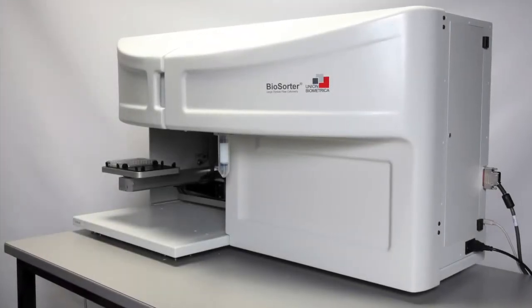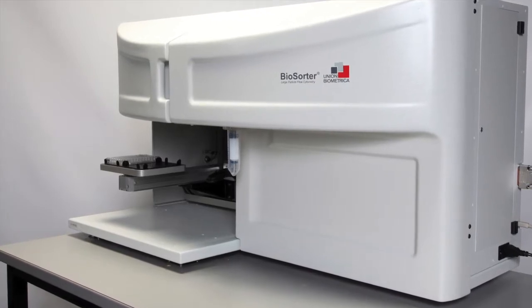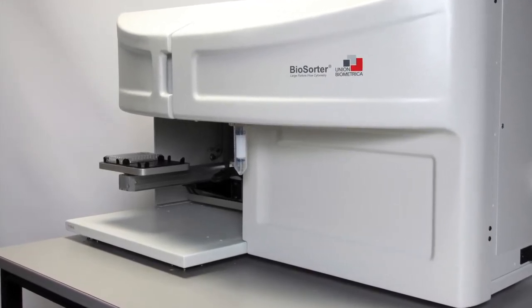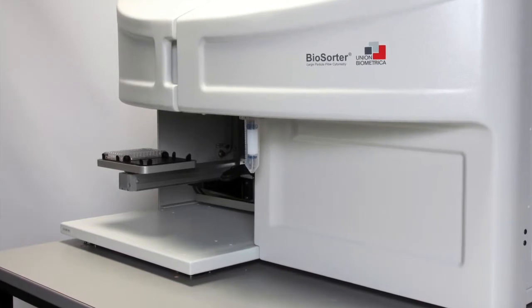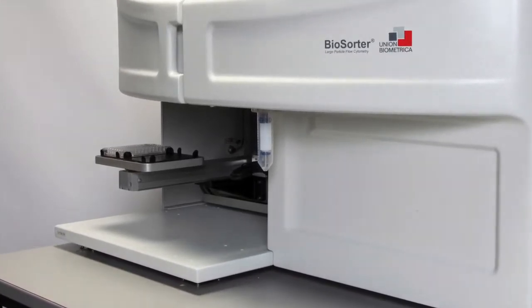The biosorter measures particle size, optical density, and multiple fluorescent parameters. Use of a gentle air sorting mechanism means samples can be collected intact, unharmed, and remain viable for your next experiment.